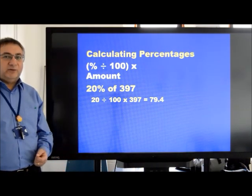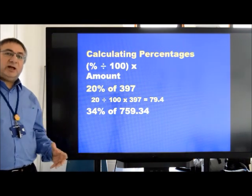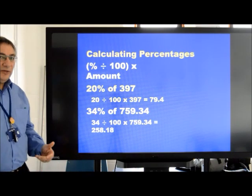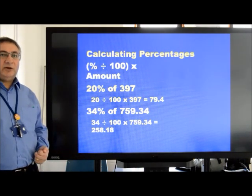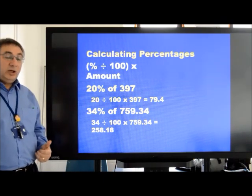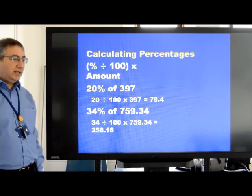Another example, thirty-four percent of seven hundred and fifty-nine point three-four. Again, using the same formula, thirty-four divided by one hundred multiplied by seven hundred and fifty-nine point three-four would give us an answer of two hundred and fifty-eight point one eight.